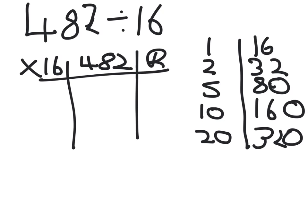We find the one that is closest so that's 20 lots. Write 20 and that is 320. And you have a remainder of 162.